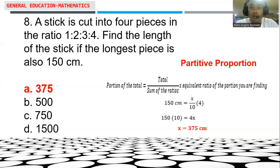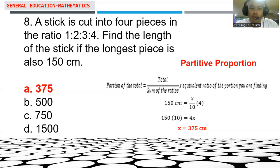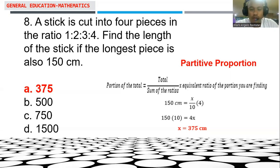To apply partitive proportion, we use the formula: the portion equals the total multiplied by the ratio of that portion over the sum of ratios. We know 4 represents 150 centimeters, the longest piece. The sum of the ratios is 1 plus 2 plus 3 plus 4, which equals 10. We are looking for the total length x.